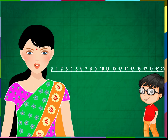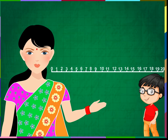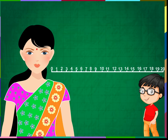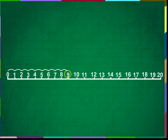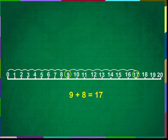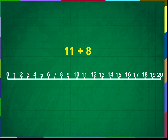Now let us add two numbers with the help of this number line. Add 9 and 8 on the number line. Let us start from 0 and go up to 9 in a long jump. Now from here let us jump eight more numbers. We are at 17. The sum is 17.